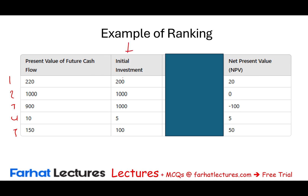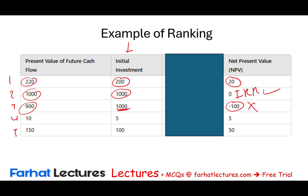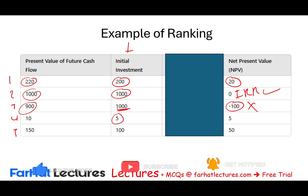Project 1: initial investment is 200, present value of future cash flows is 220, NPV is 20. Project 2: initial investment is 1,000, present value is 1,000, NPV is 0 — whatever rate of return we used is the IRR. Project 3: investment is 1,000, present value is 900 — negative NPV, forget about this project. Project 4: initial investment is 5, present value is 10, NPV is 5. Project 5: initial investment is 100, present value is 150, NPV is 50.